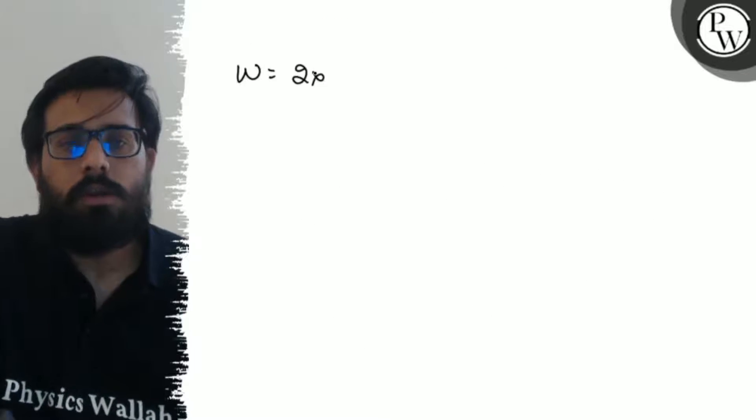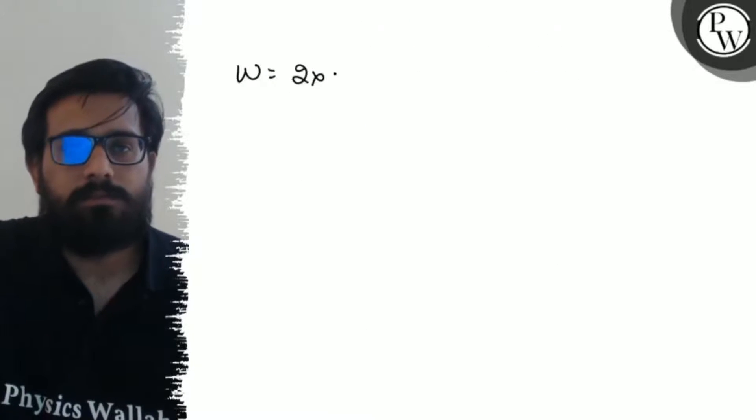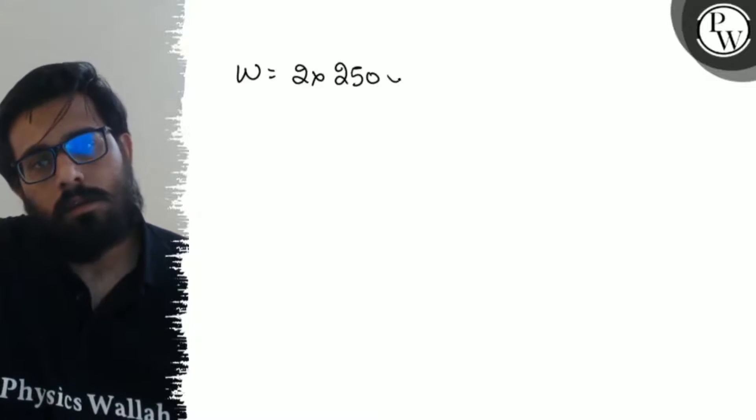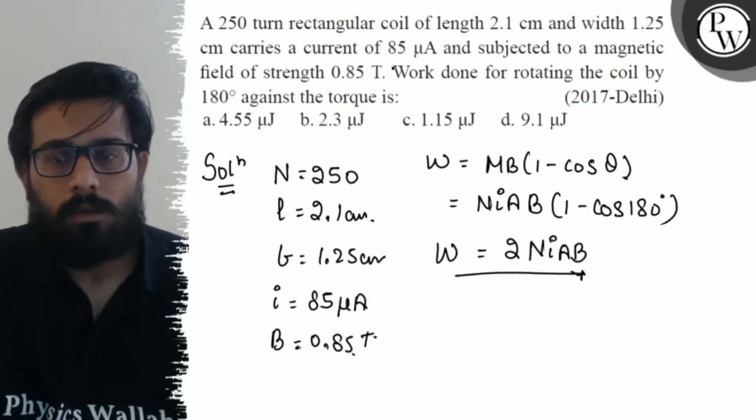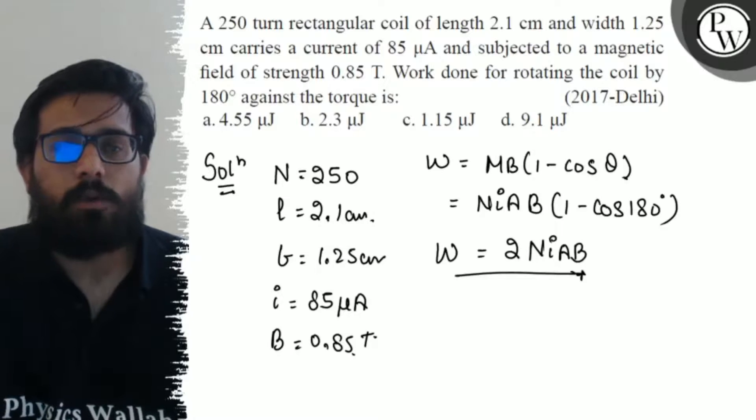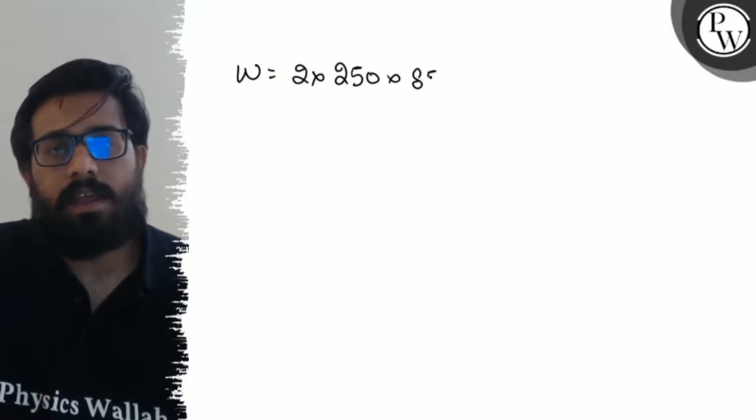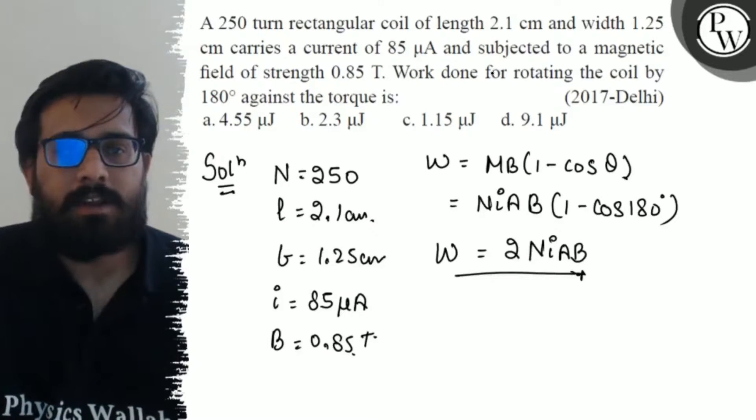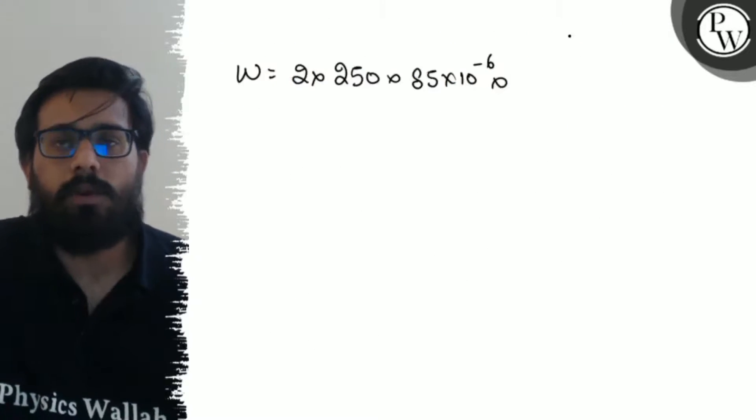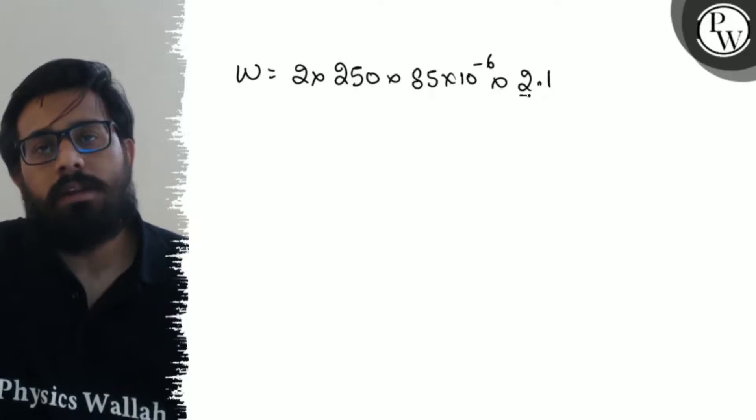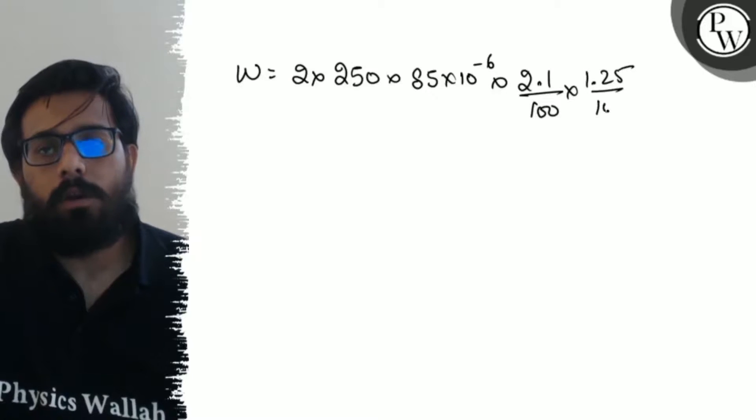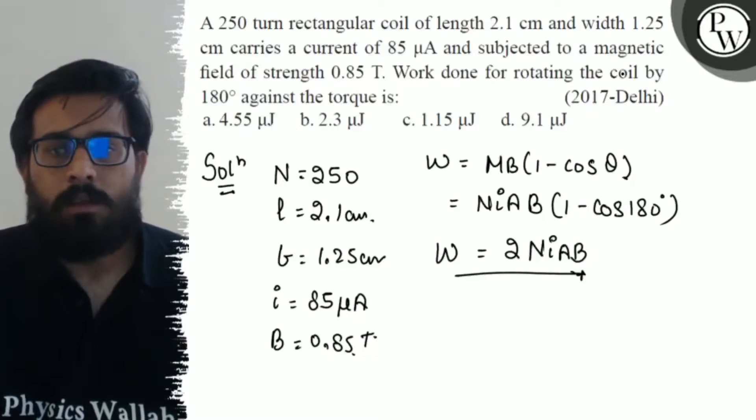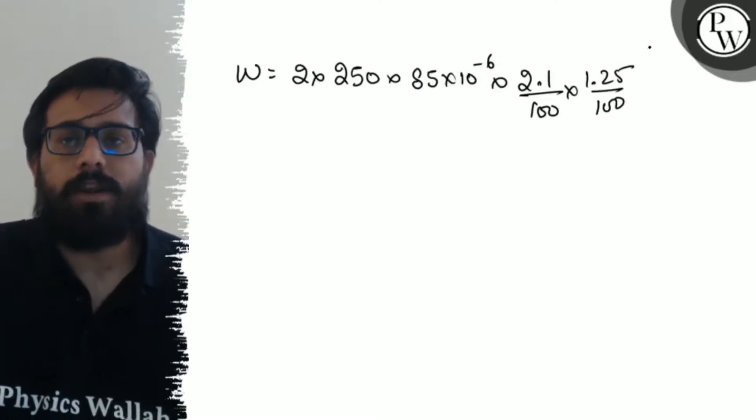W equals 2 times 250 times 85 times 10 to the minus 6 times area. Area equals length times width, 2.1 times 1.25. Converting centimeters to meters: 2.1 upon 100 times 1.25 upon 100, times B equals 0.85.